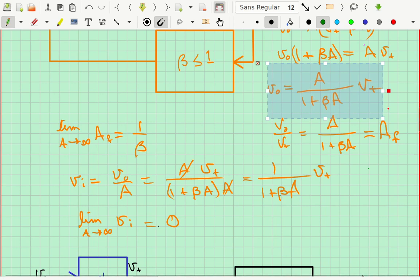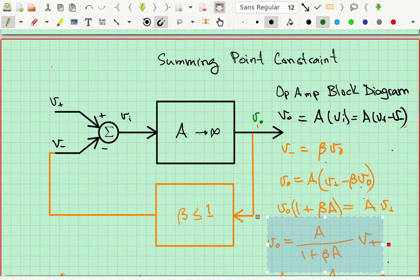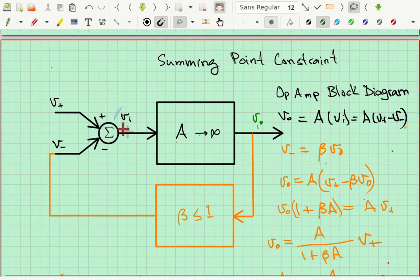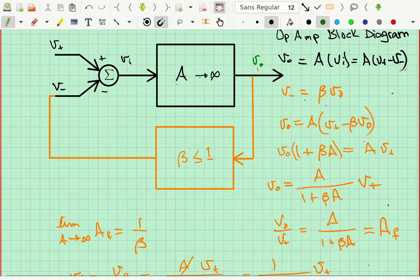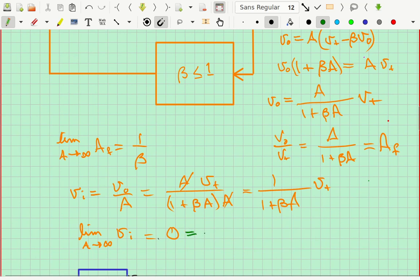And now if you remember, A was a very large number. So basically if we take the limit as A goes to infinity of this, we end up with VI equals 0. Now if VI equals 0, remember VI equaled V plus minus V minus. You can see it right here. There's VI and it's equal to this V plus minus that V minus. So if I do that, that says that this is equal to V plus minus V minus, which implies that V plus equals V minus. And that's the summing point constraint right there.